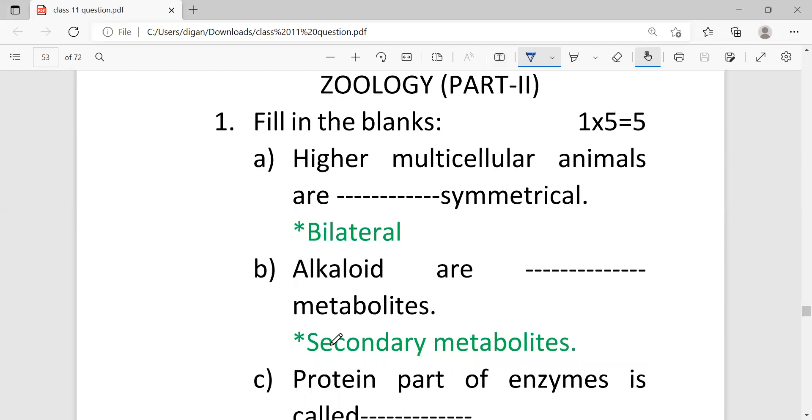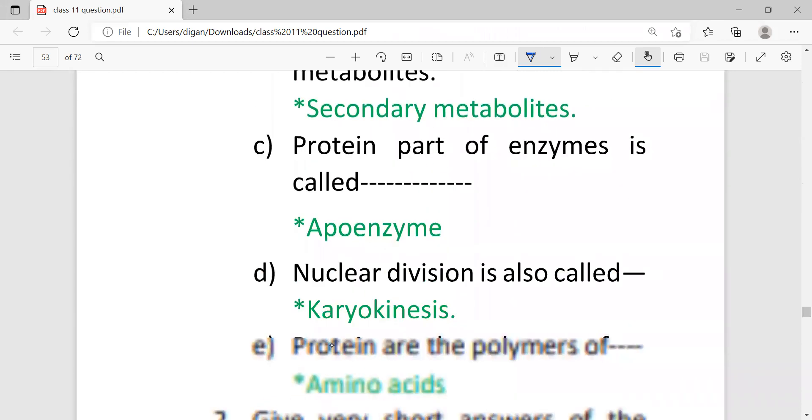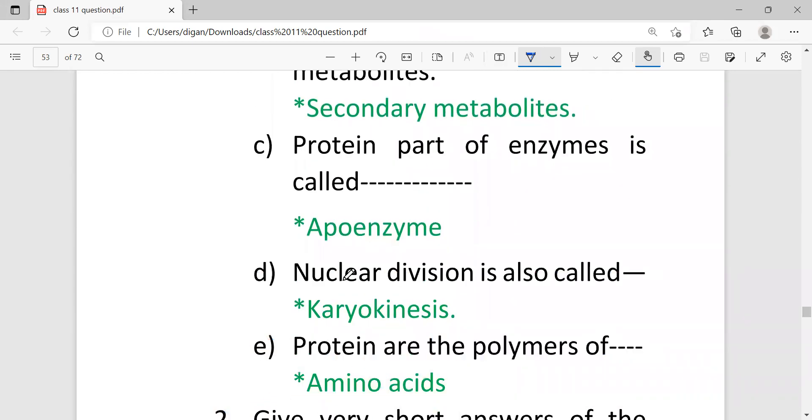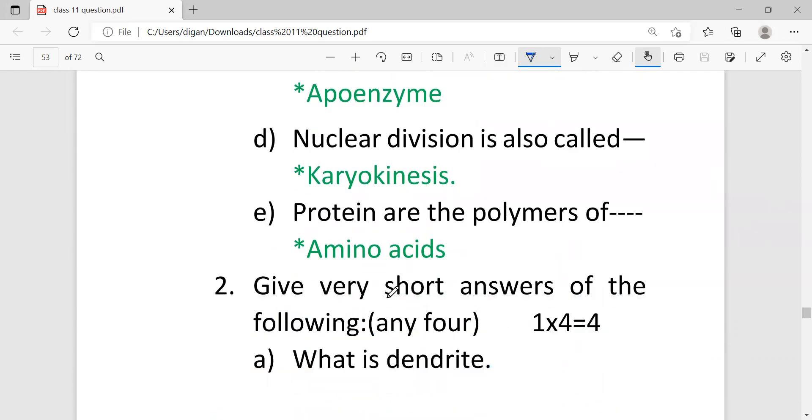Next, alkaloids are metabolites - they are secondary metabolites. Protein part of enzyme is called apoenzyme. Nuclear division is also called karyokinesis. Proteins are the polymers of amino acids.